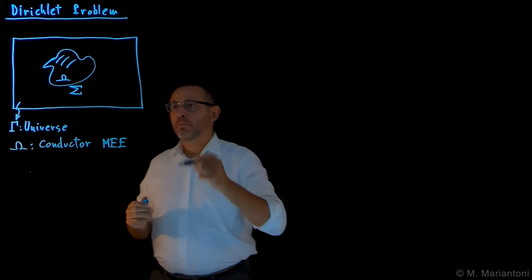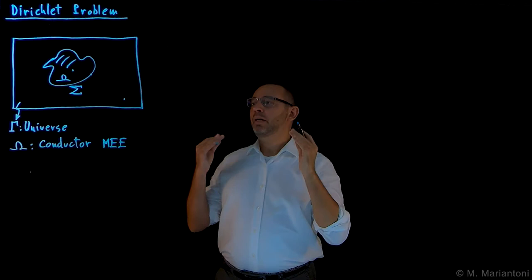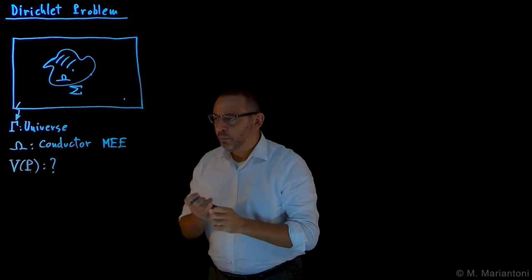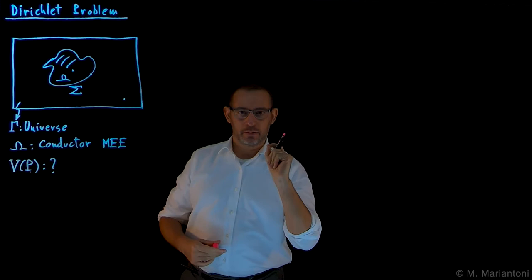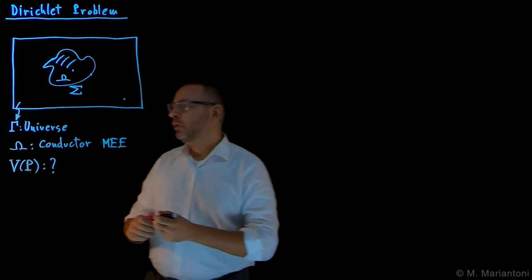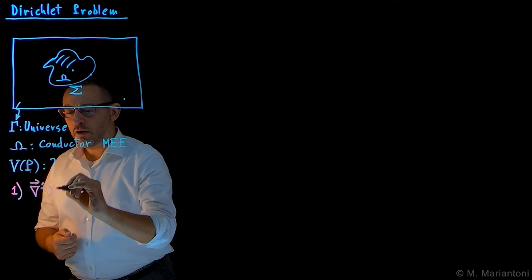We intend to calculate for any point in space — this point could be either outside the conductor, on the surface of this conductor, or within the conductor — the electrostatic potential V at any point P in space. This is what we want to compute. What are the five rules I need to follow in order to compute V? Rule number one of the Dirichlet problem — in particular, this is called an external Dirichlet problem. The first step is to use the Laplace equation, which tells us that the scalar Laplacian of V equals zero.